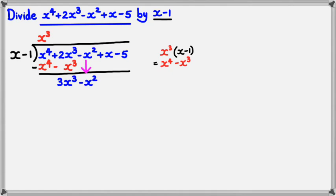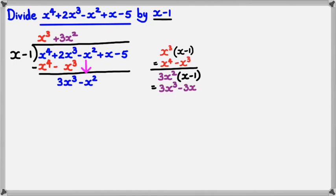Going back to the quotient, this time I'm looking at 3x cubed. So, I'd have to multiply x with 3x squared — you always eliminate that first variable. So, I've got 3x squared multiplied by x minus 1. That's equal to 3x cubed minus 3x squared. I'm going to write that down here, and once again I'm going to subtract the two lines. 3x cubed take away 3x cubed is obviously 0. Minus x squared minus minus 3x squared would equal plus 2x squared.